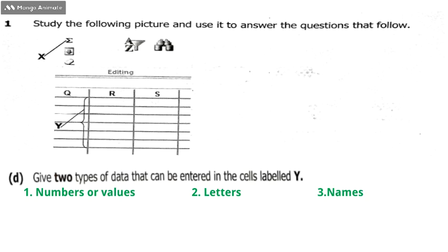We can also enter names or text or labels. So those are the things that can be entered in Y, so you can pick two from those I've mentioned and write those as the things that can be entered in those cells.